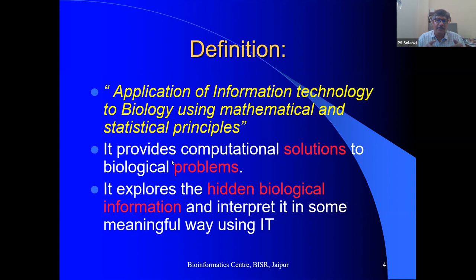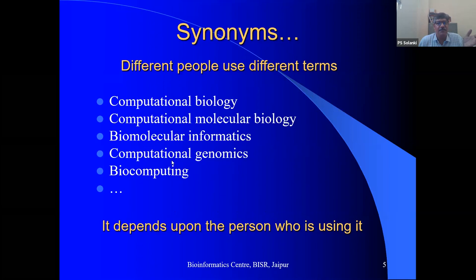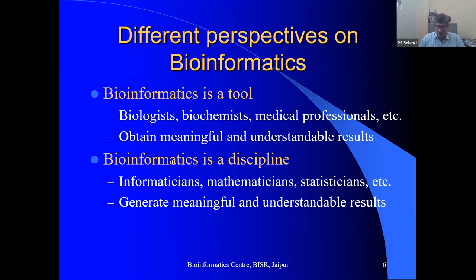Given a sequence, we predict regions that could be genes — it's all about predictions. Similarly, in the case of proteins, crystallographic structures are essentially atomic coordinates that we convert into well-defined structures. Bioinformatics has different synonyms: computational biology, computational molecular biology, biomolecular informatics, computational genomics — all referring to using computers to analyze biological data.